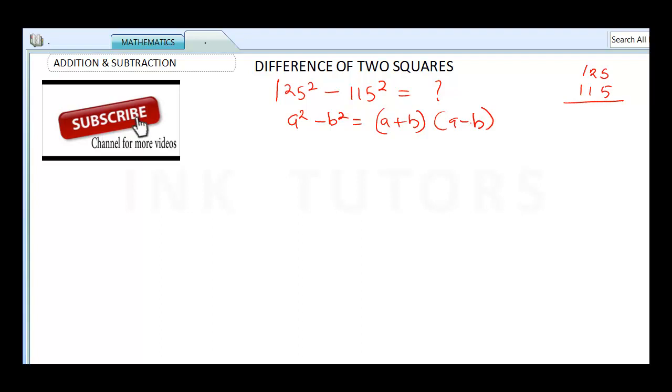Before we solve this question, I want us to apply some smaller numbers so we can get to understand it better. So the first one I'm going to do is 9 square minus 7 square. We're going to call our 9 A and our B is going to be 7. So it's going to be 9 plus 7 multiplied by 9 minus 7.